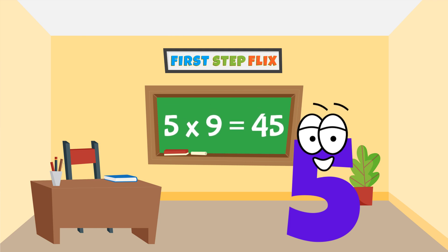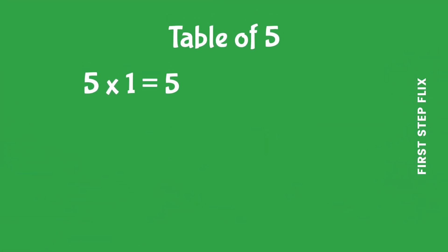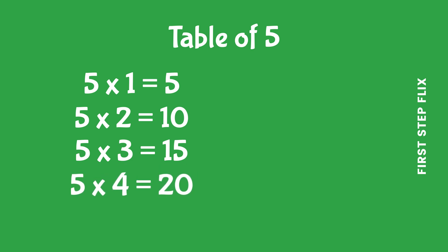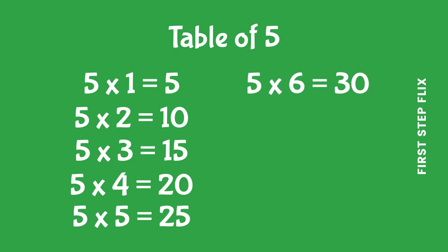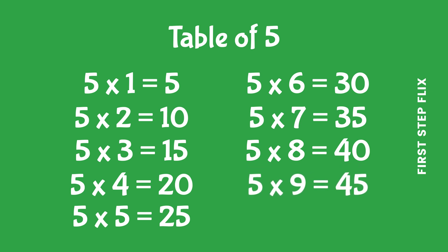Five nines are forty-five, five tens are fifty. Let's repeat. Five ones are five, five twos are ten, five threes are fifteen, five fours are twenty, five fives are twenty-five, five sixes are thirty, five sevens are thirty-five, five eights are forty, five nines are forty-five, five tens are fifty.